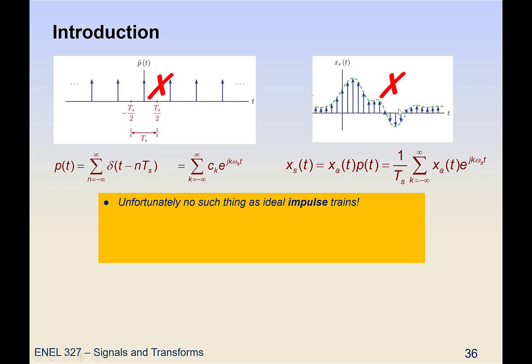Which means we cannot actually have a sampled signal which is just a bunch of impulses either. Mathematically great, practically no. The closest thing we can get is actually a pulse train rather than an impulse train, and we're going to take a look at a couple different examples of that.